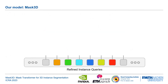Our model predicts instance queries that encode semantic and geometric information about each instance in the scene. The key idea is to compute the feature similarity between instance queries and all learned point features.